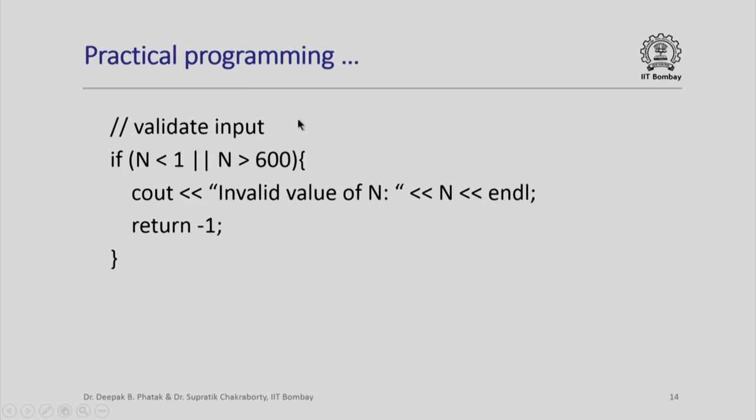After reading n, if n is less than 1 or if n is greater than 600, I output a string: invalid value of n, print the value of n, and return minus 1. If I include this in my program at the beginning, the program will run properly even for invalid values of n.